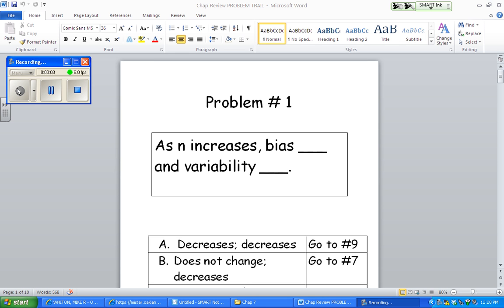Okay, let's take a look at the answers to this problem trail. Again, this is Chapter 7. Number 1, as n increases, so as our sample size gets larger, what happens to bias and what happens to variability?